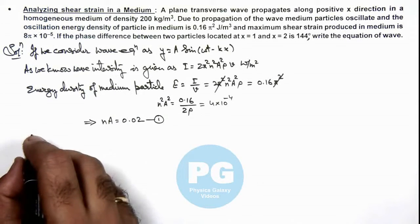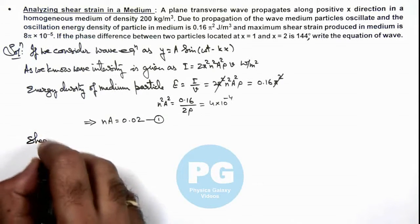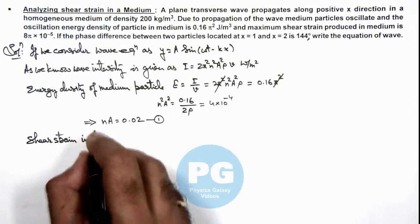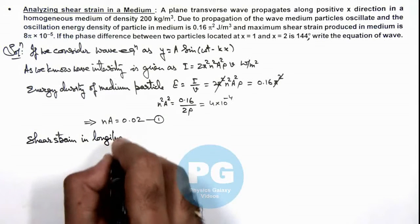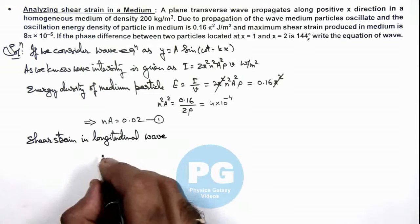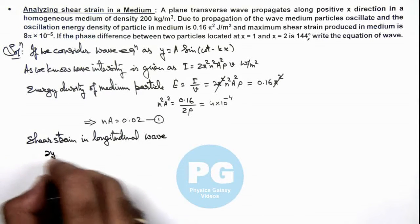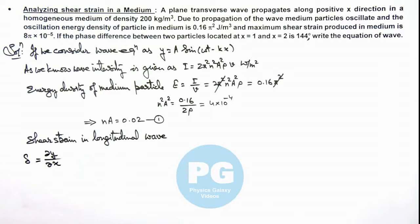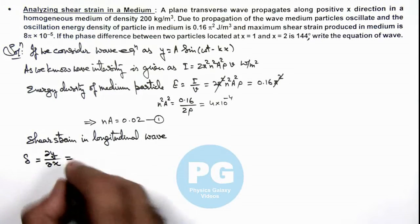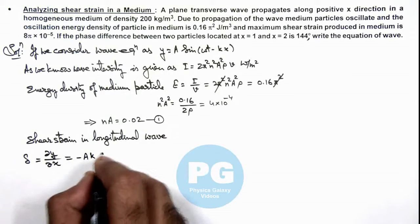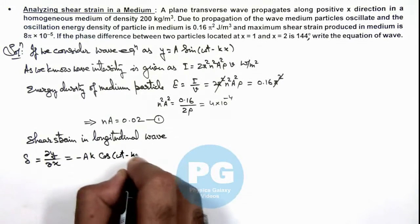And next term we analyze: shear strain in longitudinal wave. It can be given as ∂y/∂x, which we write as delta the shear strain. So for the given equation it can be given as minus ay k cos(ωt - kx).